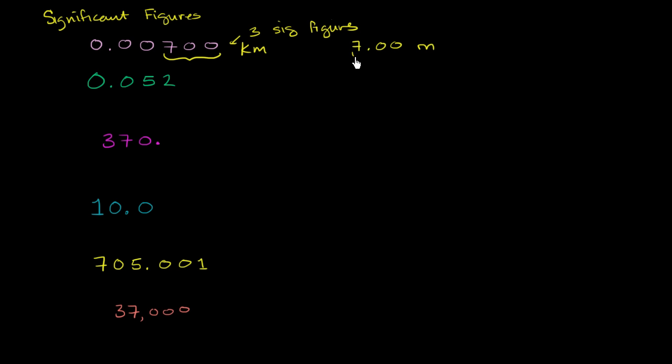But I think when you look over here, it makes a lot more sense why you only have three significant figures. These zeros are just kind of telling you, are just shifting it based on maybe the units of measurement that you're using. But the numbers that are really giving you the precision are the 7, the 0, and the 0.